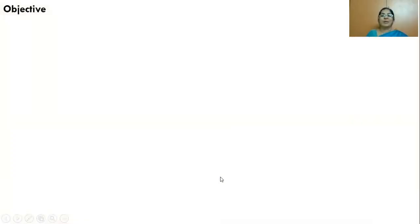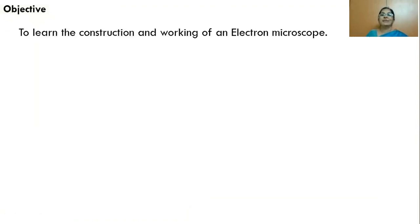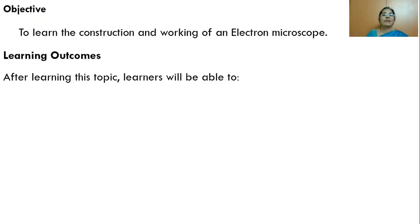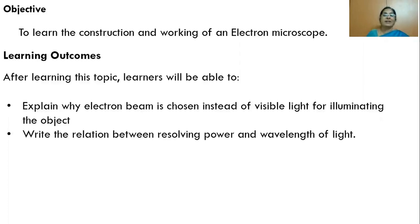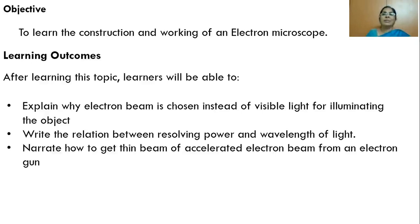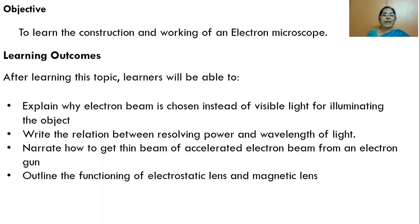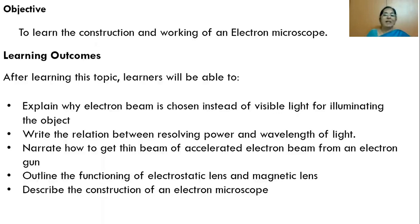The objective of today's talk is to learn the construction and working of an electron microscope. The learning outcomes are that learners will be able to explain why an electron beam is chosen instead of visible light, write the relation between resolving power and wavelength, narrate how to get a thin beam of accelerated electrons from an electron gun, outline the functioning of electrostatic and magnetic lenses, and describe the construction and working of an electron microscope.